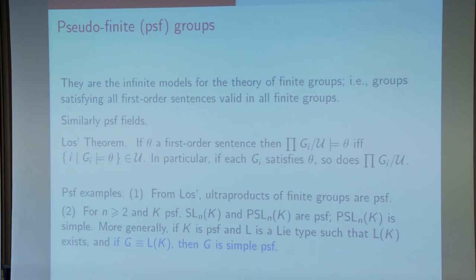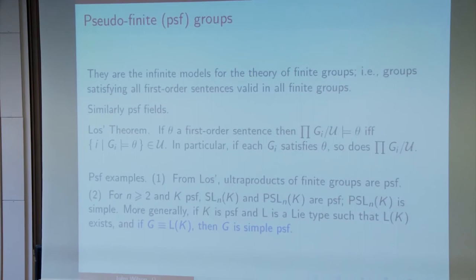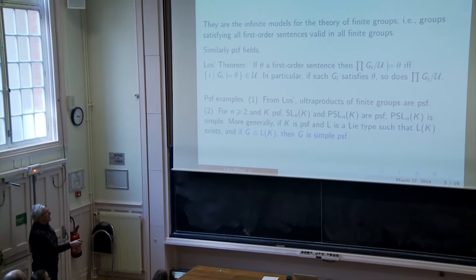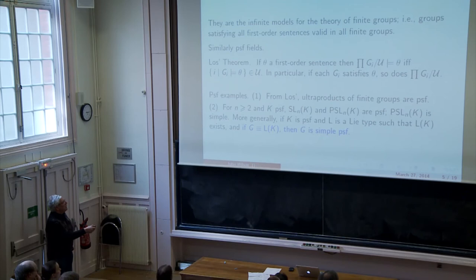And more generally in fact, it doesn't have to be PSL. It can be any Lie type, any Chevalley functor on groups. If K is a pseudo-finite field and L is a Lie type such that L(K) exists, and if G is elementarily equivalent to L(K), then G is a simple pseudo-finite group.